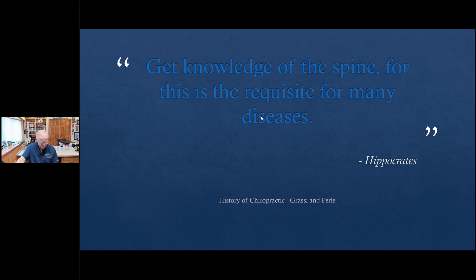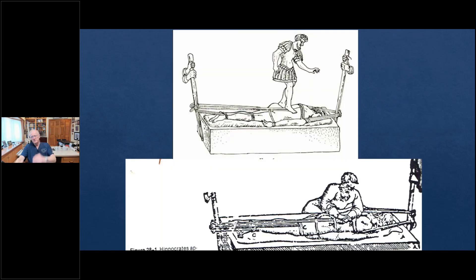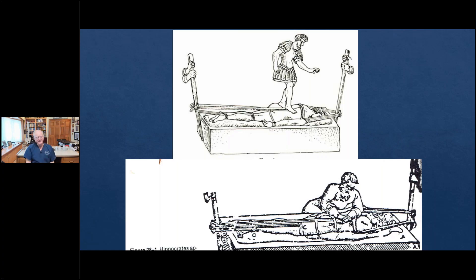Hippocrates himself — from Grassi and Pearl — said, 'Get knowledge of the spine, for this is the requisite for many human diseases.' Here is Hippocrates treating the thoracic and thoracolumbar spine. That patient is probably Asclepius. They were using traction — distraction applying a spinal adjustment. Why did he apply distraction? The same reason we do.